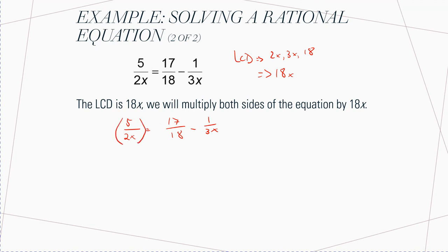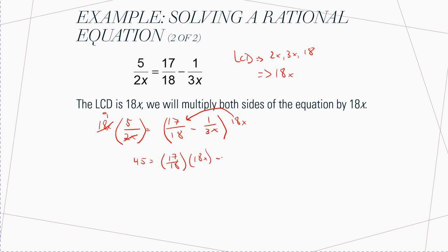I'm going to multiply both sides by 18X. The 2 and X are going to cancel and make this just a 9. So 9 times 5 gets me 45. When I distribute on the right side — 17 over 18 times 18X, the 18s cancel, leaving 17 times X. Then 1 over 3X times 18X: the X and X cancel, and the 3 and 18 reduce to 6.